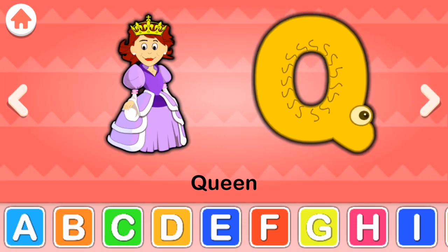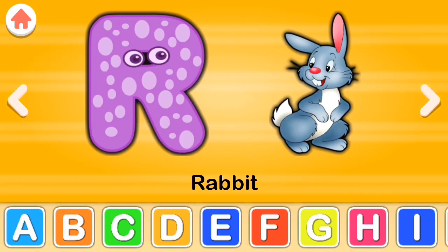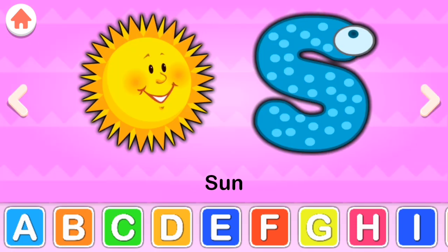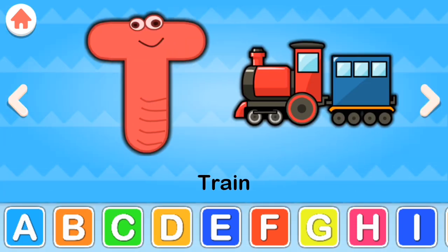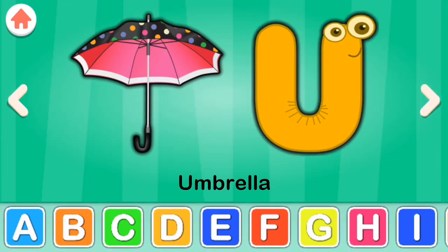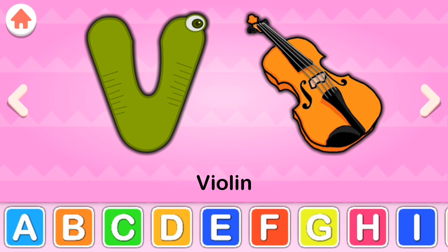Q for queen, R for rabbit, S for sun, T for train, U for umbrella, V for violin.